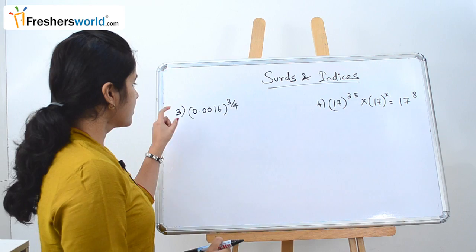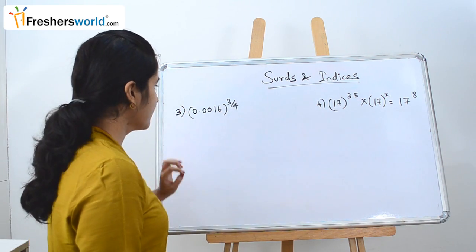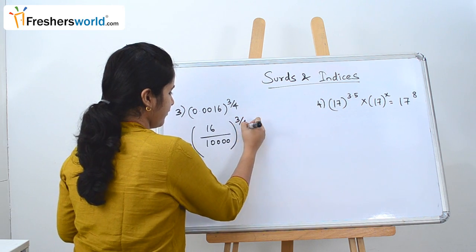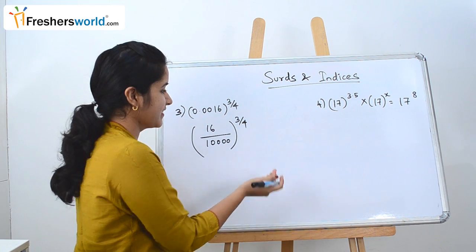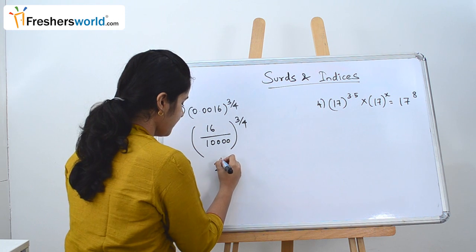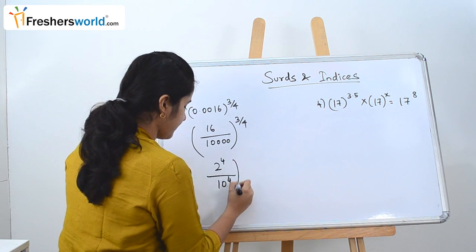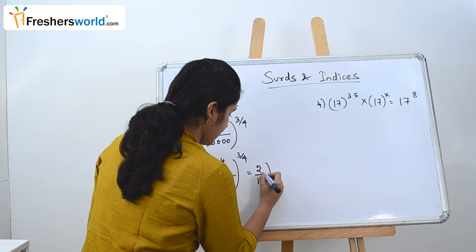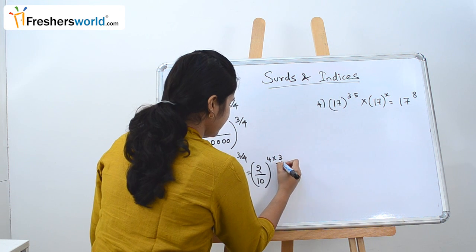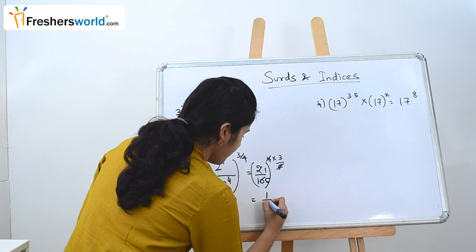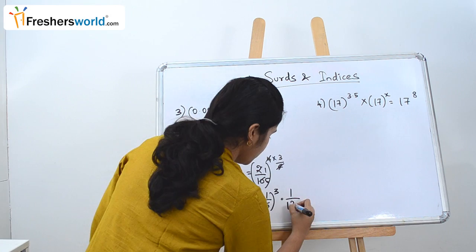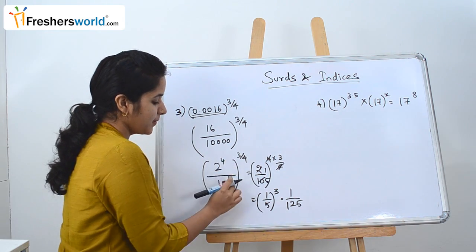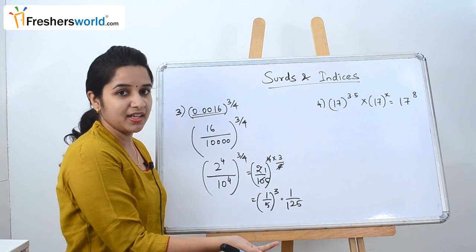The next sum is 0.0016^(3/4). We can write 0.0016 as 16/10000. Now 16 is 2^4 and 10,000 is 10^4, so this is (2/10)^4 raised to the power 3/4. The powers 4 and 3/4 cancel, giving (2/10)^3 = (1/5)^3 = 1/125. So we converted the decimal to a fraction, found a common power to cancel, and got the answer.